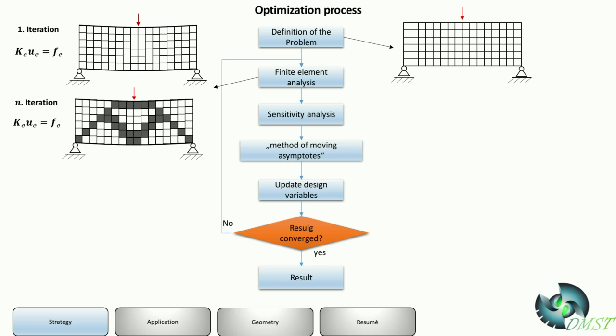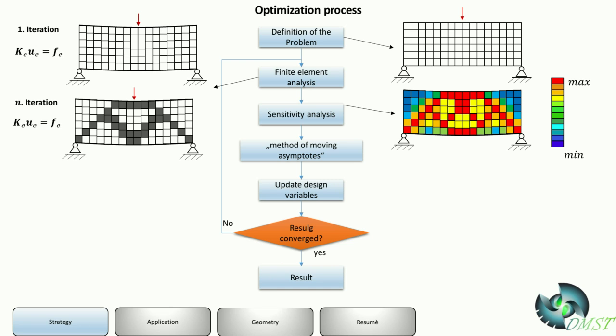We want to know where should be the black ones and the white ones, and this can be done by a sensitivity analysis. If you do this we can see the maximum, the red ones are very high and the blue ones are very low. We need this for the method of moving asymptotes.